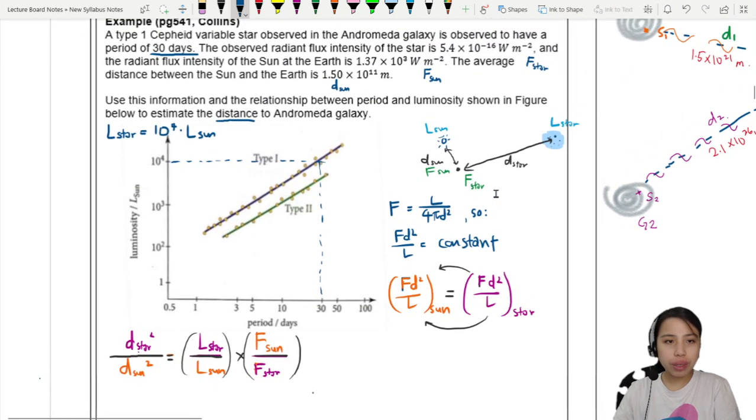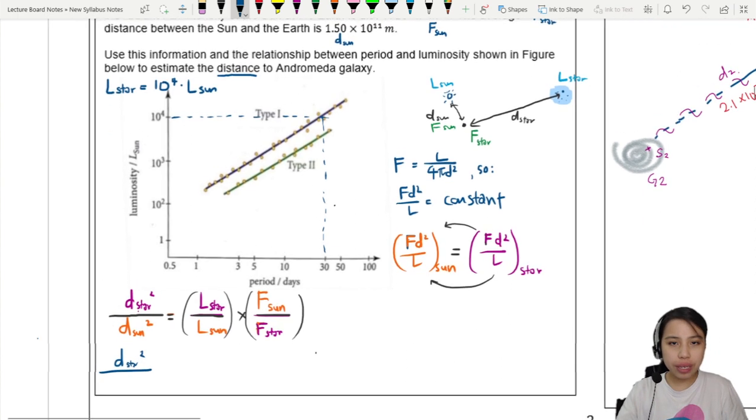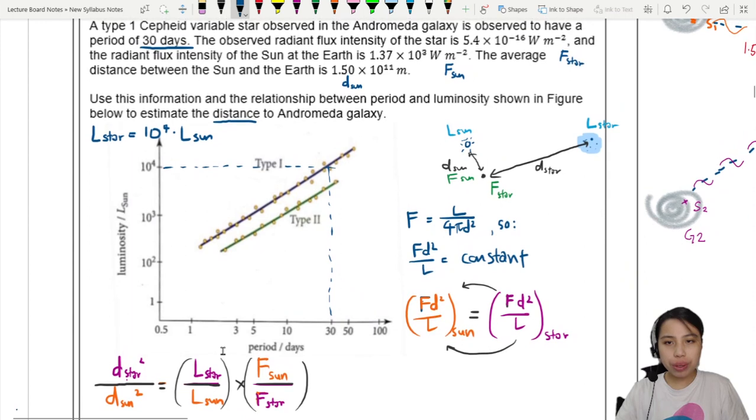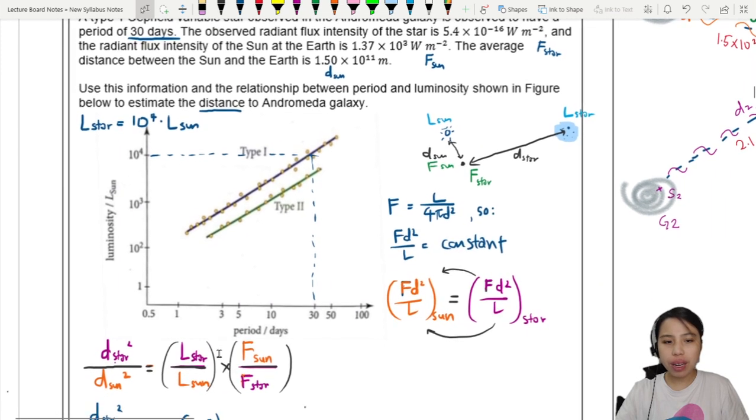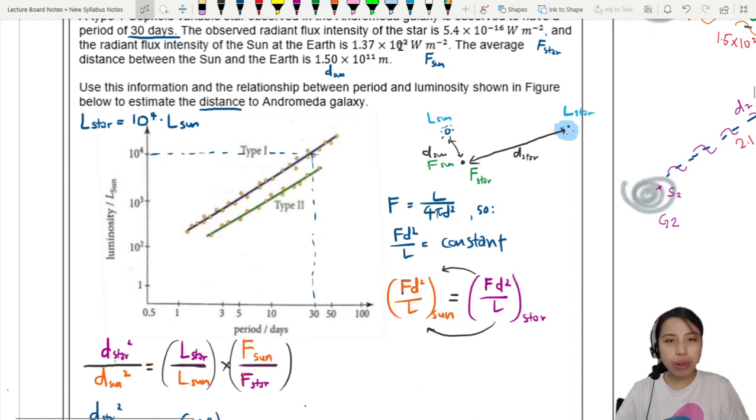Let's plug in values. Distance to star we don't know, we need to find that. Distance to sun 1.5×10¹¹ meters squared. F_star, F_sun - radiant flux intensity of the star is 5.4×10⁻¹⁶. For the sun it's 1.37×10³. That's a very big difference. This is 10⁻¹⁶, so probably you can't really see with your eyes. You gotta use a telescope or camera to help collect your photons.